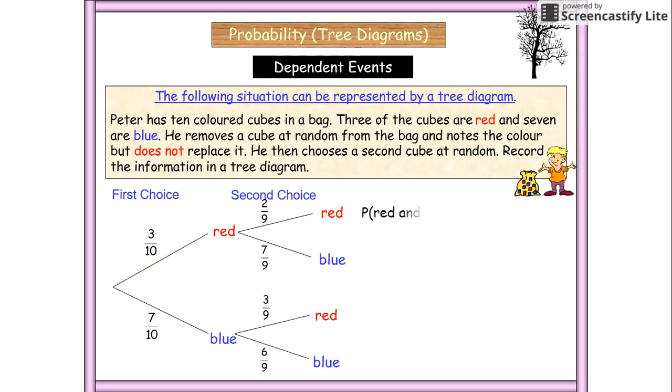So we would go RR, which we read red, and that would give us three over 10 times two over nine times that times that, which gives us six over 90. We're going to go red, blue, and we're going to get 21 over 90.